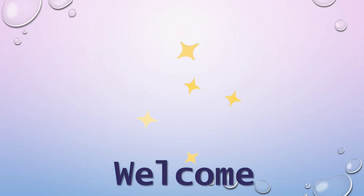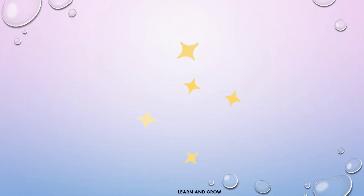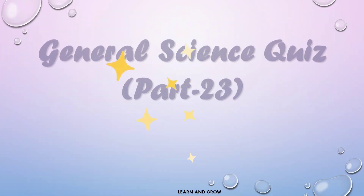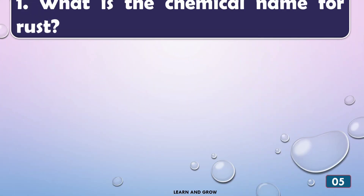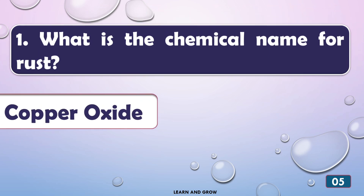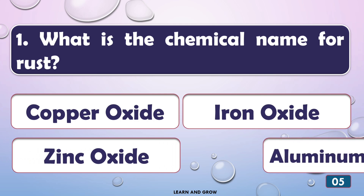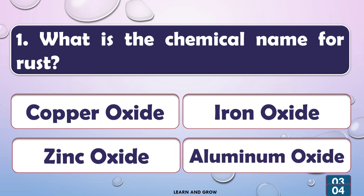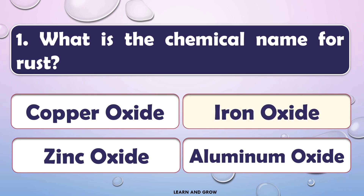Hey guys, welcome back to my channel. Learn and Grow — General Science Quest Part 23. What is the chemical name for rust? The chemical name for rust is iron oxide.